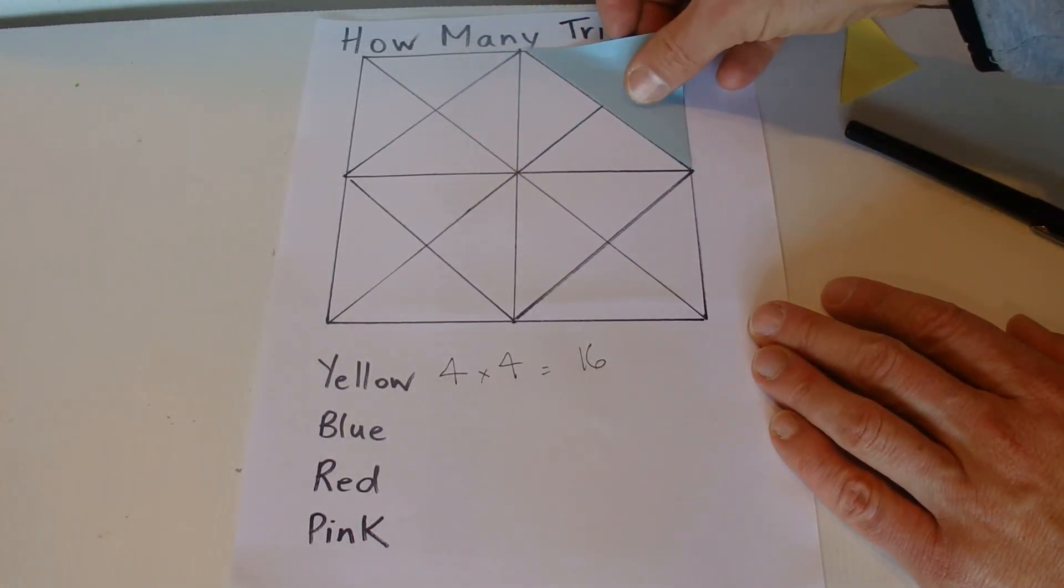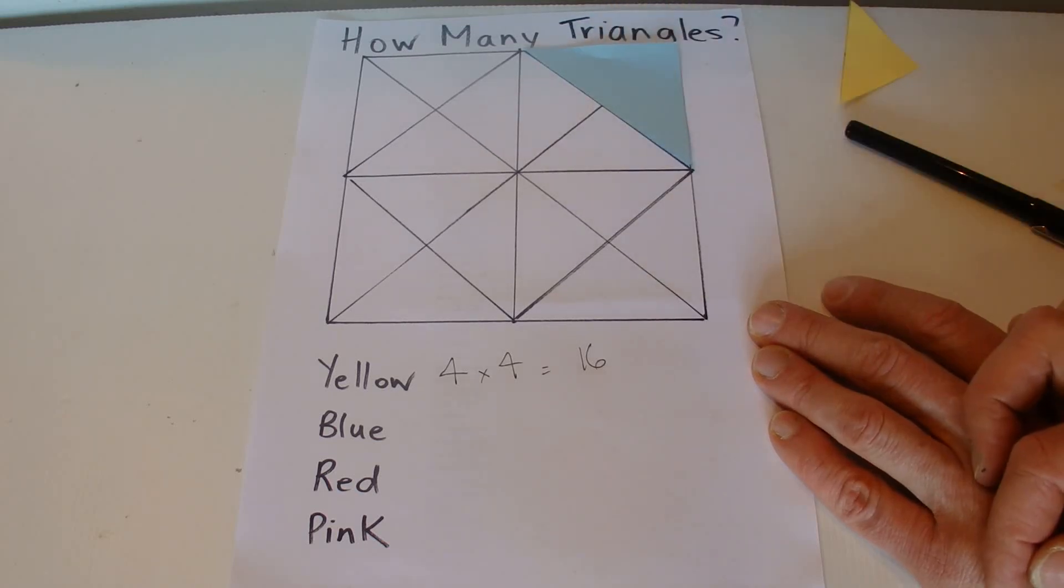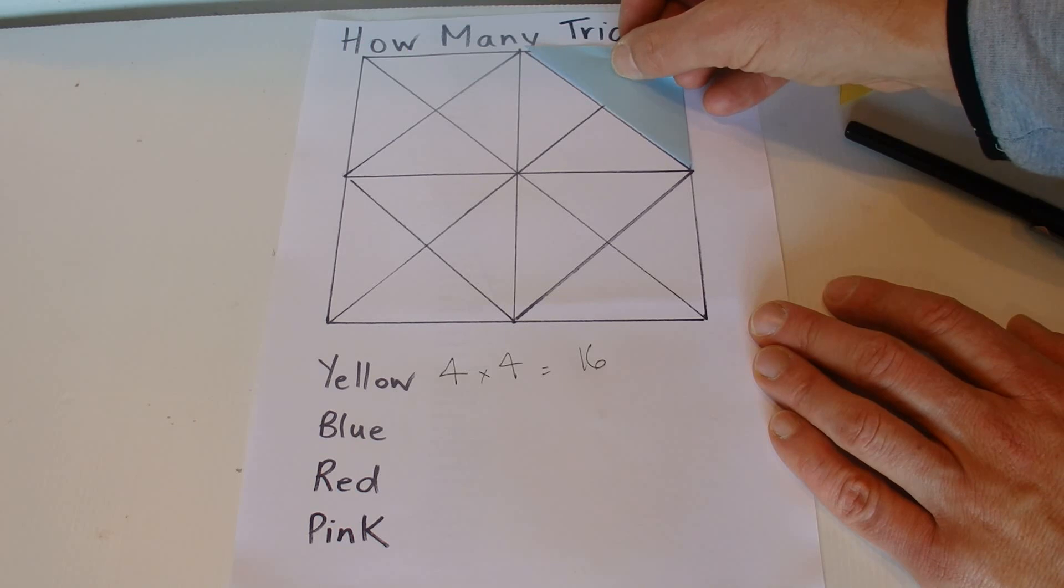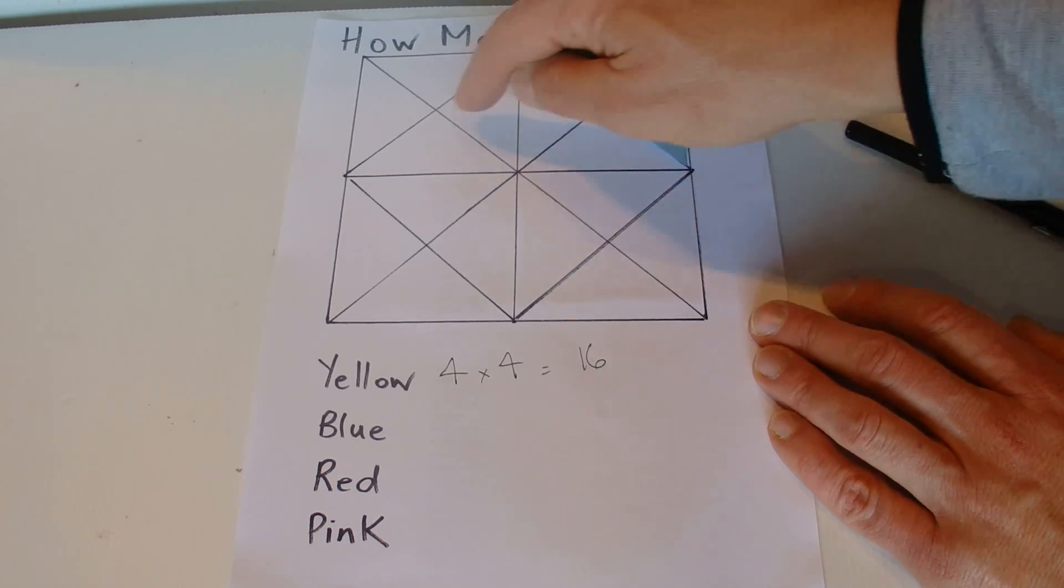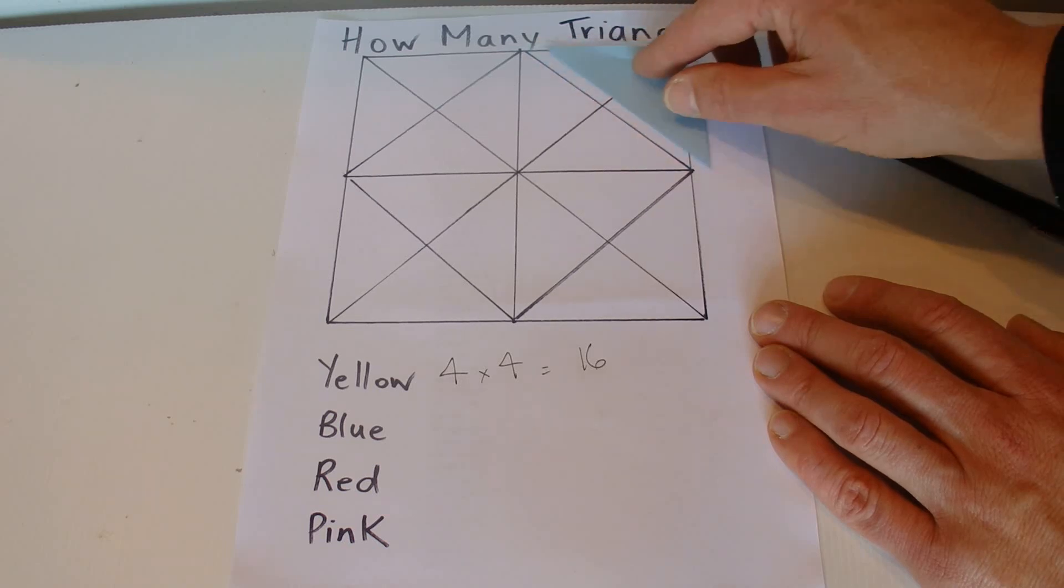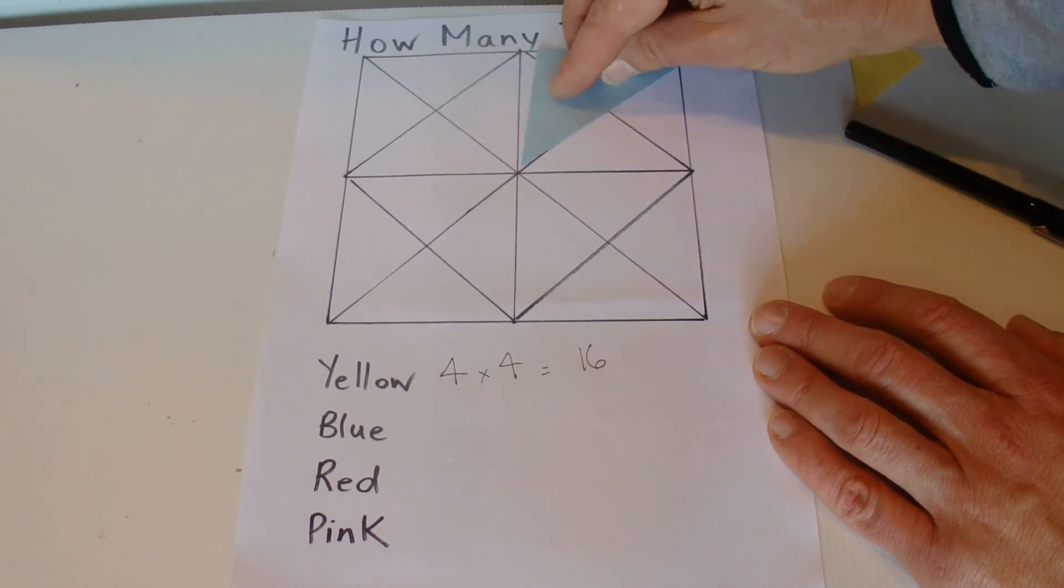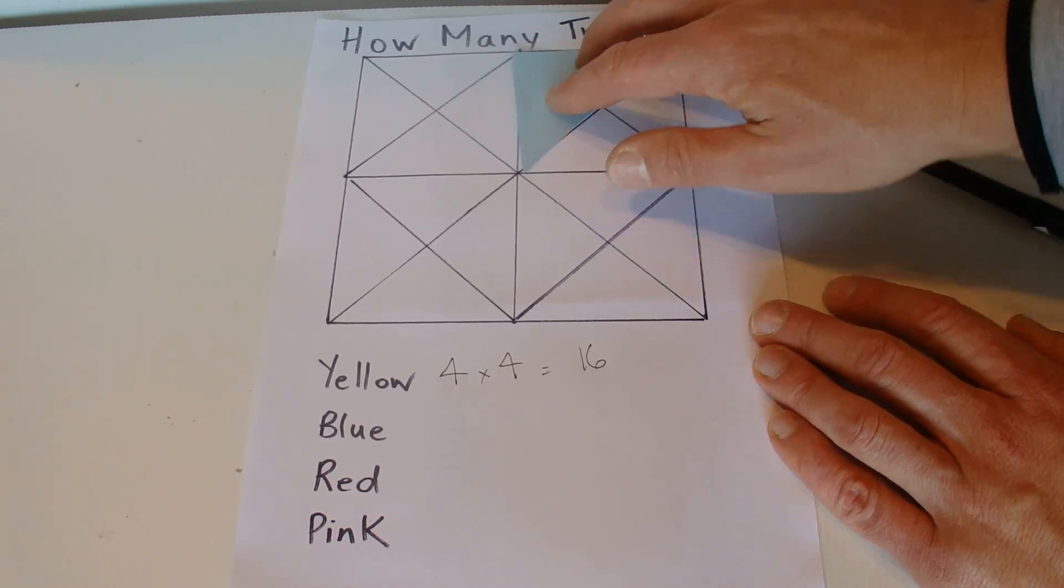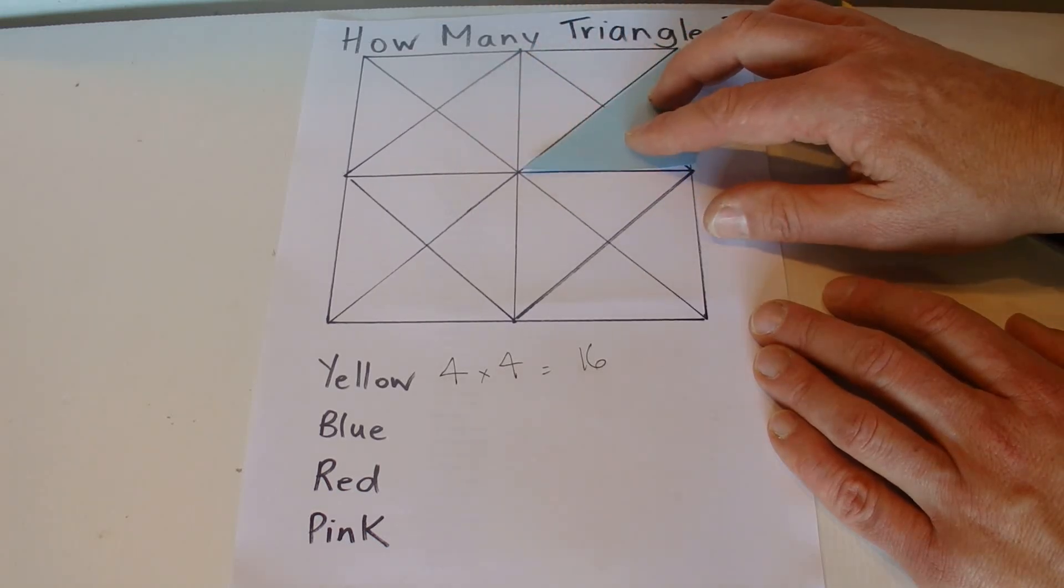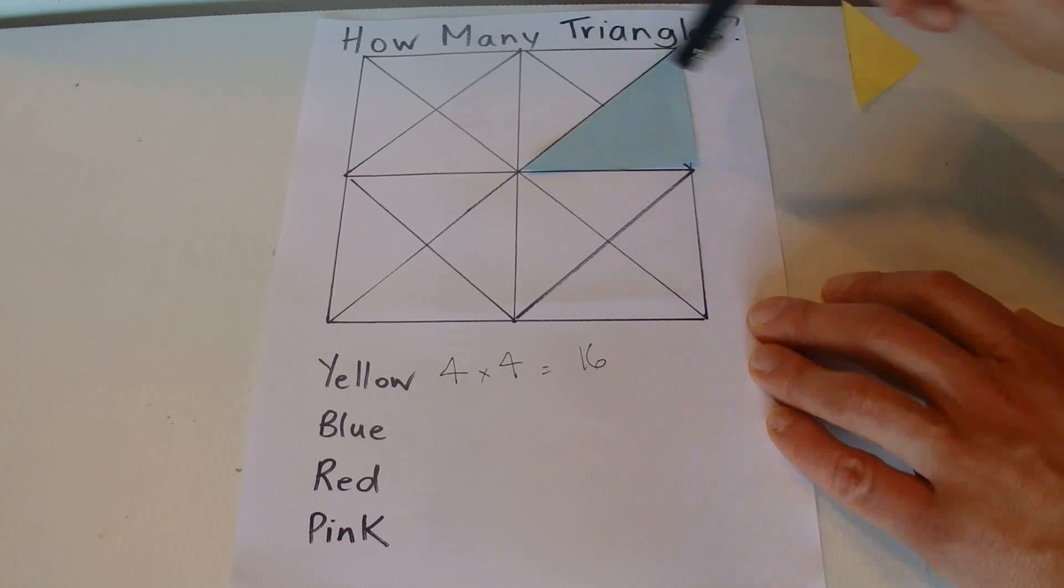And then the next size triangle we've got, I've made that blue, and that also fits within each one of these four boxes. So you can see there, there's one triangle there, there's two, there's a third blue one there, and then there's a fourth blue one as well. So there's four blue triangles in each of the boxes.